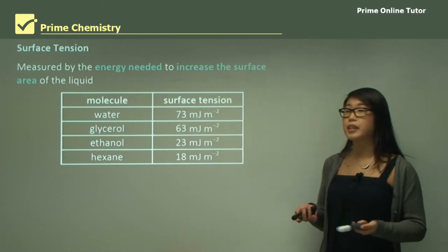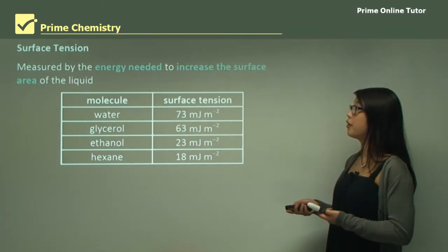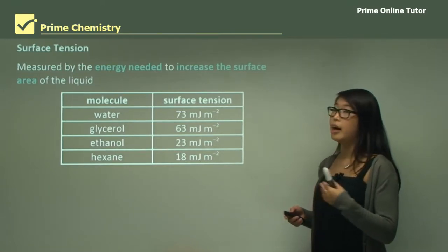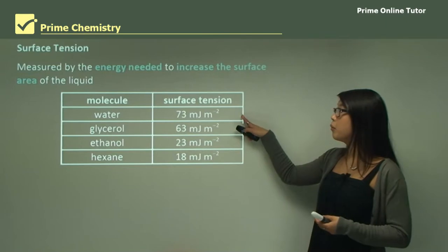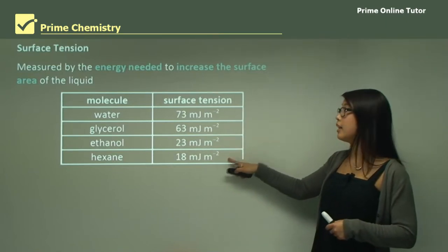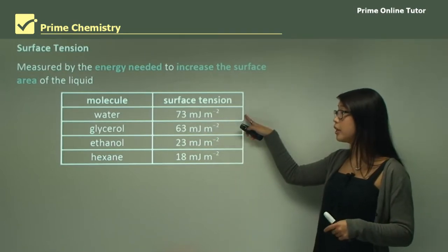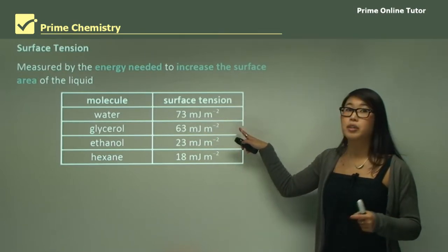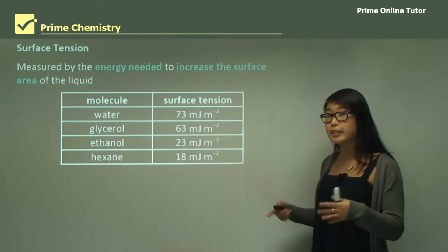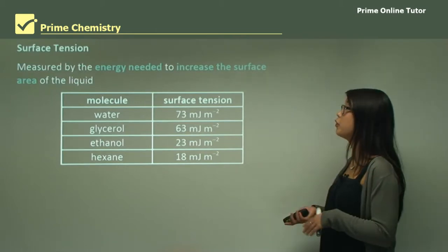We measure surface tension by looking at the energy needed to increase the surface area of the liquid — the more energy needed, the higher the surface tension. Water has a surface tension of 73 millijoules compared to hexane's 18, meaning water requires much more energy to increase its surface area and therefore has a significantly higher surface tension than hexane, which can easily spread to form a film.